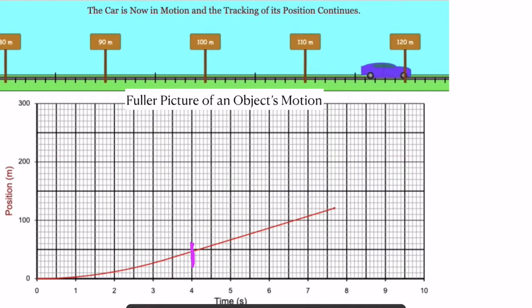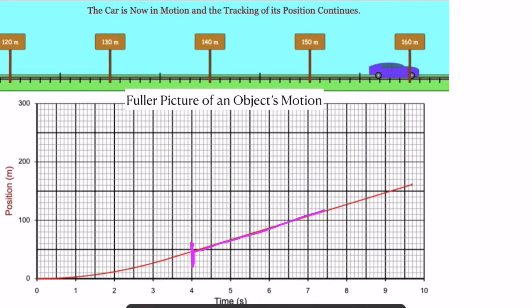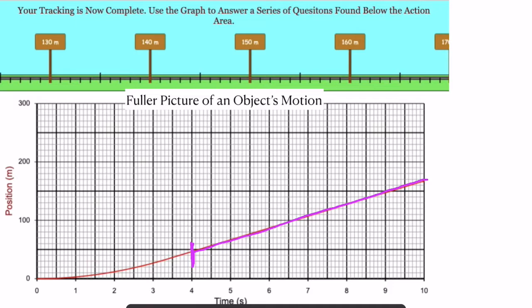Somewhere around the four-second mark, you can see that the line becomes straight. It becomes a linear graph. At this moment, the velocity is constant. In this area, it is gaining speed.